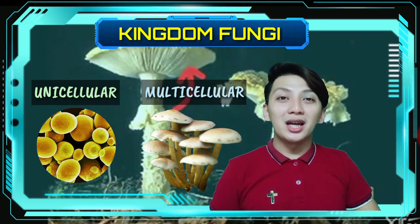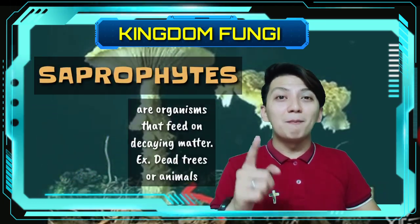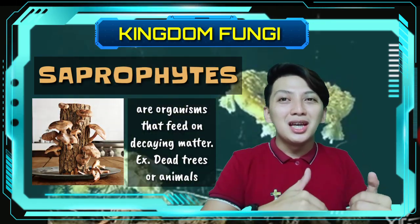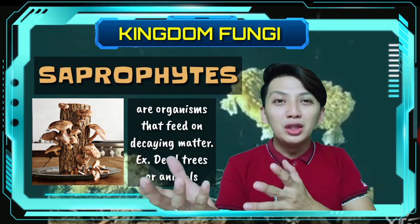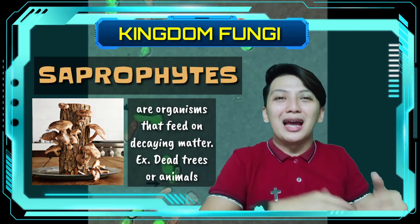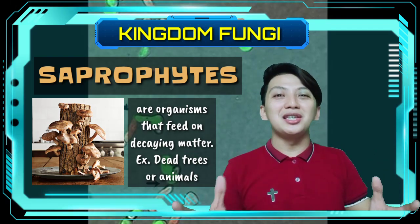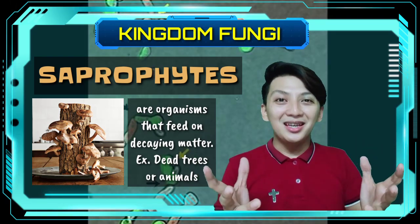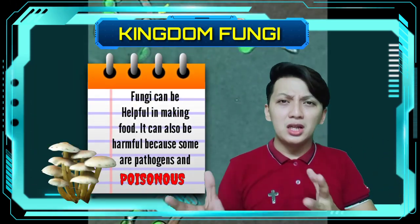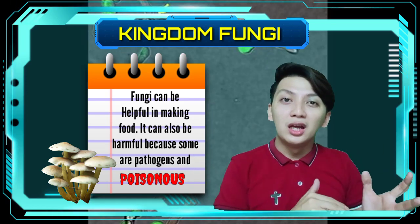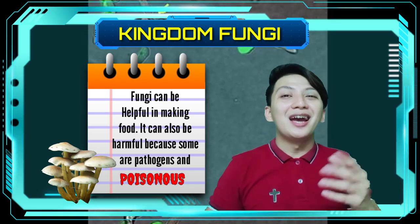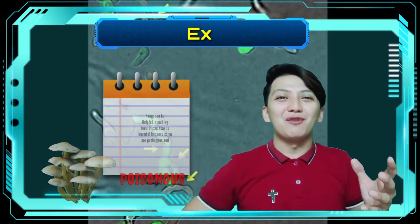Remember: fungi are saprophytes, meaning they feed on decaying matter. So if you see a decaying wood, you can see mushrooms there. You can also see fungi on decaying animals and other stuff. Fungi can be helpful, but there are also fungi that can be harmful to humans, animals, and plants. Here are some examples of fungi.